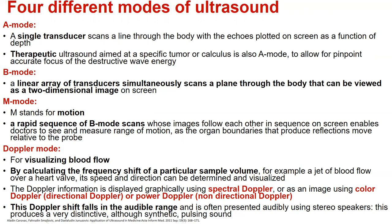The M mode, where M stands for motion — a rapid sequence of B mode scans whose images follow each other in sequence on a screen, enabling doctors to see and measure range of motion as the organ boundaries that produce reflections move relative to the probe. And the Doppler mode, for visualizing blood flow by calculating the frequency shift of a particular sample volume. The Doppler information is displayed graphically using spectral Doppler, or as an image using color Doppler or power Doppler.